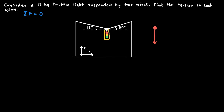This downward force vector is the weight of the traffic light, written as mass times the acceleration due to gravity. The other two forces are the two tensions pointing up to the left and up to the right. I'll call the tension going up and to the left T1. The tension in the other wire is not necessarily the same — in fact it shouldn't be, because the geometry isn't symmetric. I'll call the tension in the right wire T2.